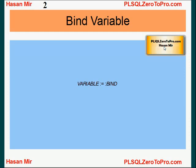The purpose of a bind variable is to get an input from the users while the program is running. The syntax would be something like what you are seeing on the screen — the actual variable name, which is a PL/SQL variable, let's say vscore, or x, or vfirstname. And it's equal to — we are assigning this bind value to this variable.